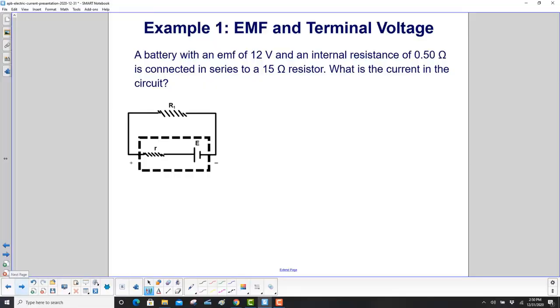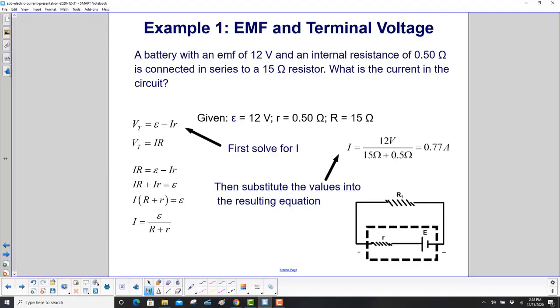Example 1: A battery with an EMF of 12 volts and an internal resistance of 0.50 ohms is connected in series to a 15-ohm resistor. What is the current in the circuit? We have our givens: EMF is 12 volts, internal resistance is 0.50 ohms, and external resistance is 15 ohms. We need to solve for I.